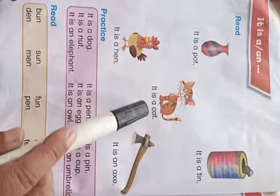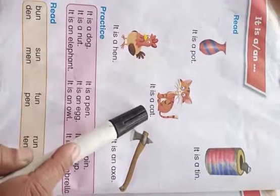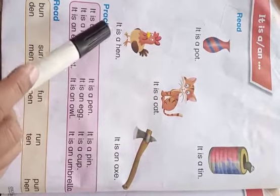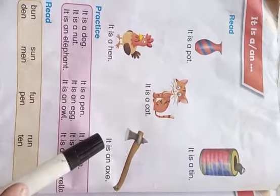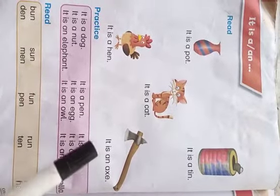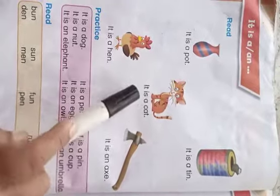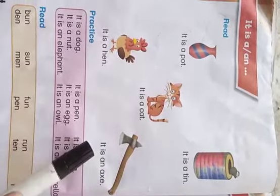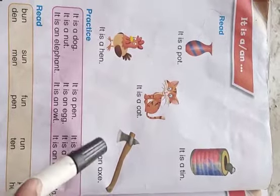It is a cat. It is a hen. It is an egg. Now you will revise this.